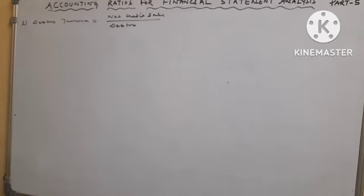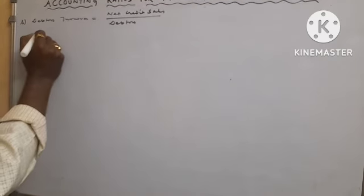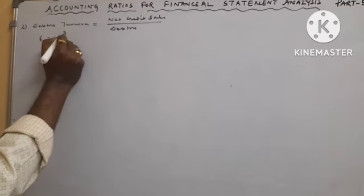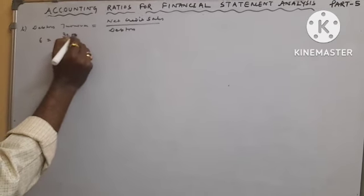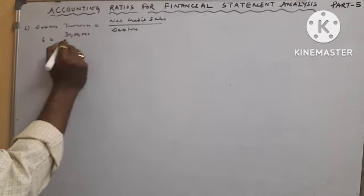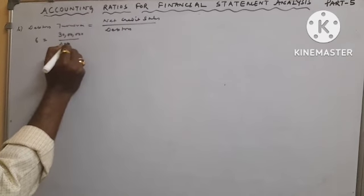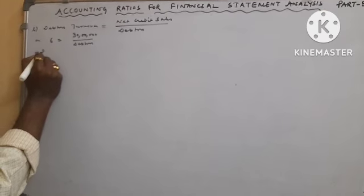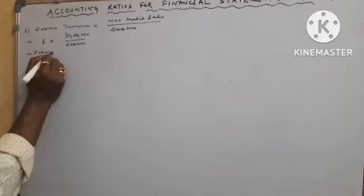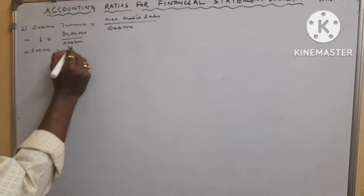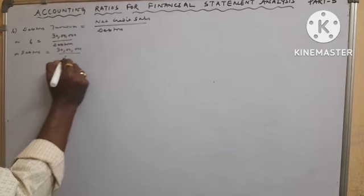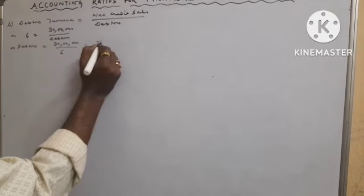Or we can write trade receivables. So debtors turnover we got 6. Net credit sales we calculated 30 lakhs divided by debtors equals to rupees 5 lakh.